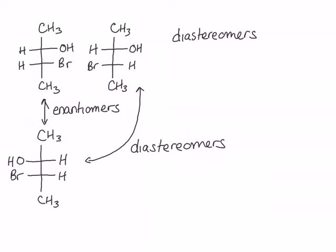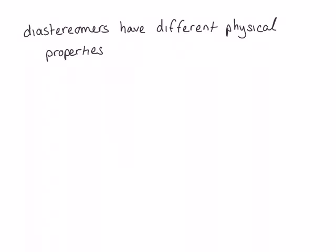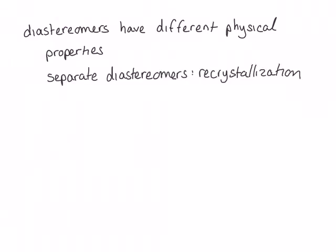This is an important distinction. Remember that enantiomers have identical physical properties, except for the direction in which they rotate plane polarized light. This is not true for diastereomers — diastereomers have different physical properties. This means we can separate two diastereomers using methods we use for separating non-isomeric molecules, such as recrystallization, distillation, and chromatography.